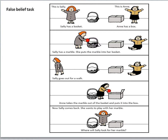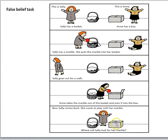Early research in theory of mind used a task called the false belief task. Here's Sally — she has a basket, and Anne has a box. Sally puts her marble in her basket while Anne is watching. Sally goes out for a walk, and Anne moves the marble from the basket to the box. Now Sally comes back. Where will Sally look for her marble? We the observers know the marble is in the box, but if we have a theory of mind, we understand that Sally has a false belief — she believes the marble is still in the basket where she left it. So we predict she will look in the basket, even though we know it's in the box.